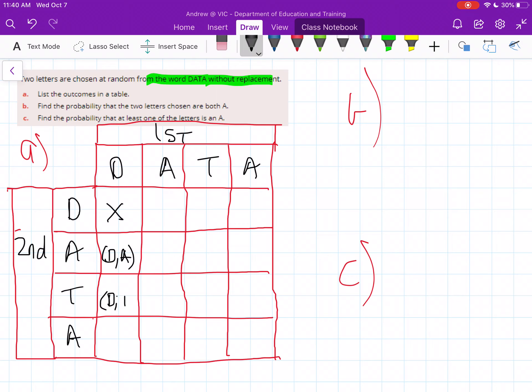We can have D, T, probably should have made this a little bit bigger. And then we can also have D, A here because it's a different A. It's the second A in DATA. So that's all the options we can have from the first and the second. You can see I've put all the ones from the first selection there and I'll continue doing that.